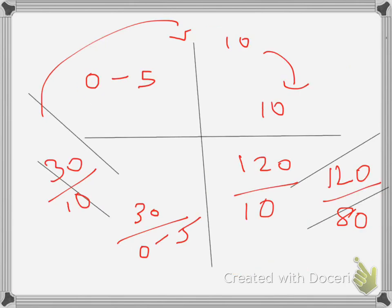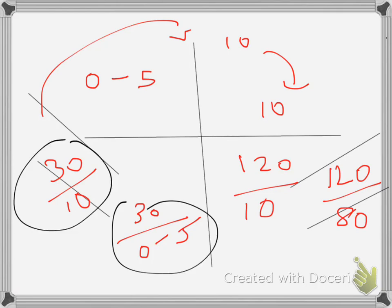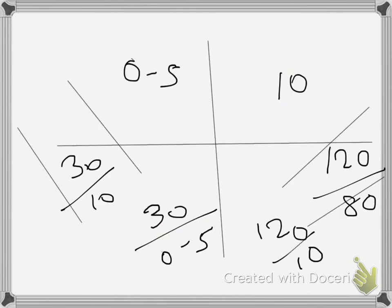So here is the summary: the right atrial pressure is 0 to 5, the right ventricle is 30 over 0 to 5, the pulmonary artery is 30 over 10, which is almost equal to the wedge pressure, which is equal to the left atrial pressure. The left ventricle pressure is 120 over 10, and the aortic pressure is 120 over 80. This is the summary of the average normal pressures of the heart.